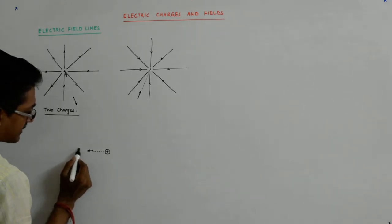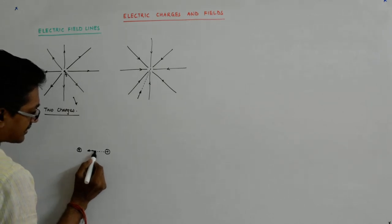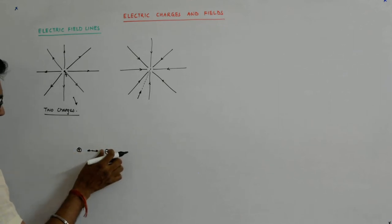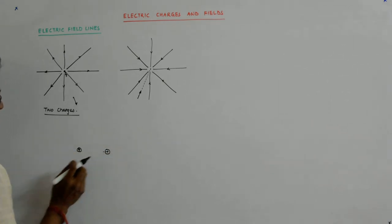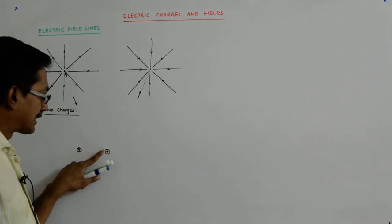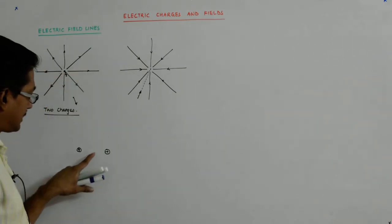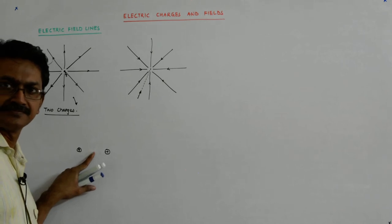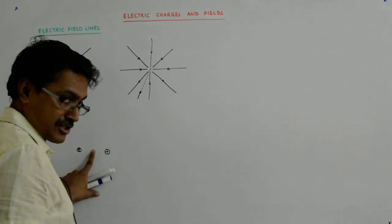If one charge was not there, there would have been a field due to the other — radially outward. But since both charges are present, this component of one field will cancel the field from the other. So where we were expecting a field with a single charge, the field has vanished.